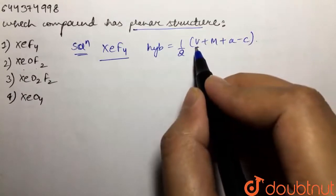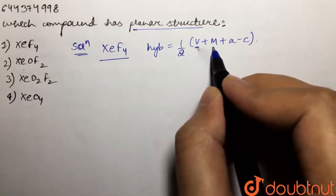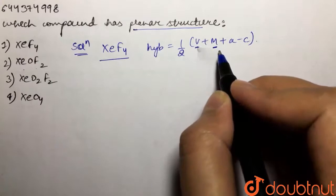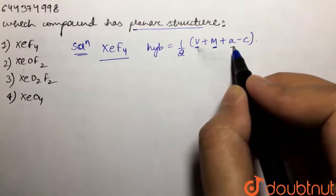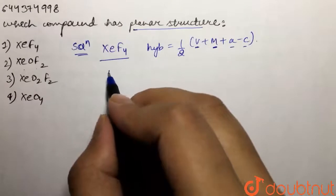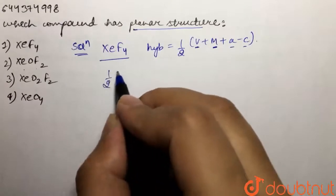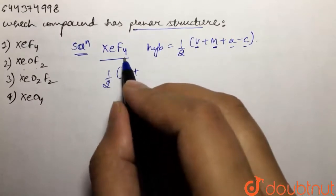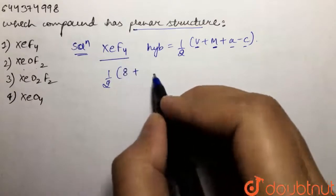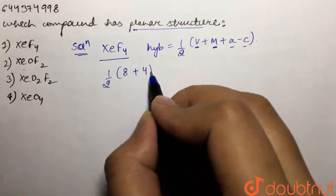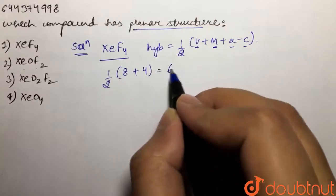V is the number of valence electrons of the central atom. M is the number of monovalent atoms attached to the central atom. If it's an anion we add that charge, and subtract if it's a cation. Here the central atom is xenon, which has eight valence electrons, plus it is making four monovalent bonds with fluorine. So we have four monovalent fluorine atoms attached to it. This would be 12 by 2, which is equal to 6.